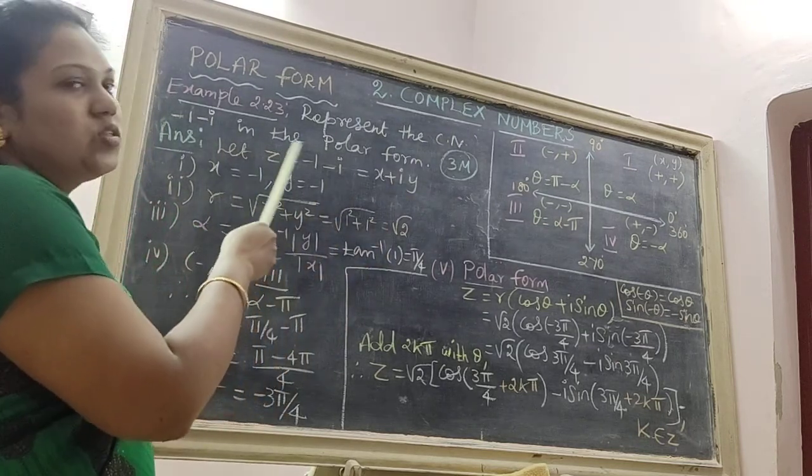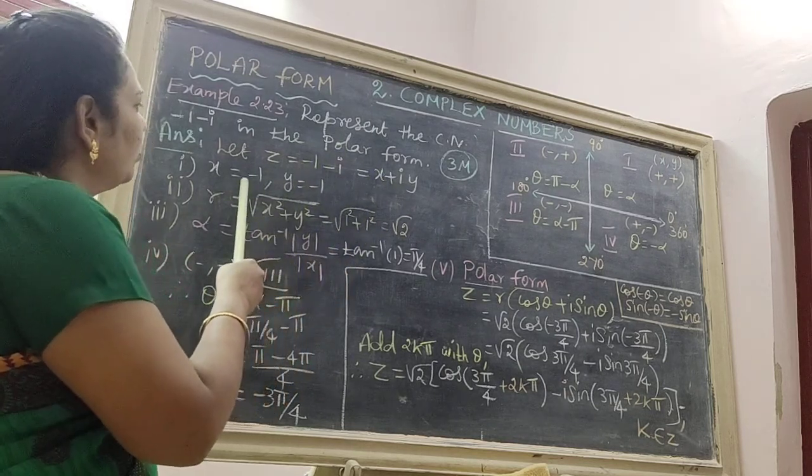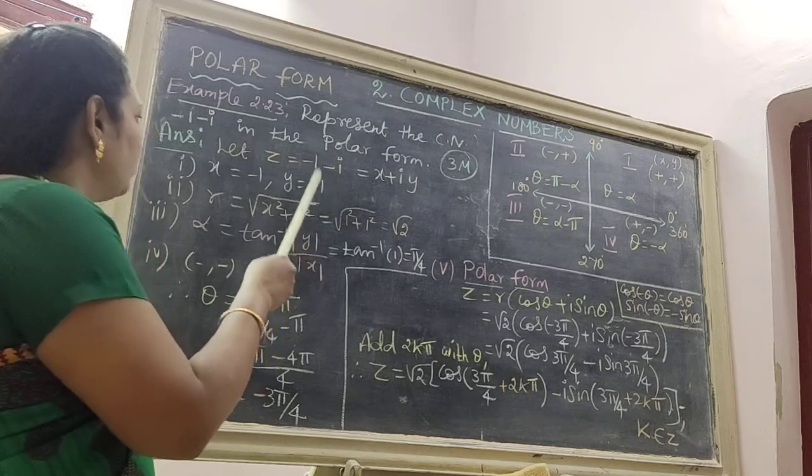The answer is that z is equal to minus 1 minus i, which is equal to x plus iy. Therefore, x is equal to minus 1, y is equal to minus 1.